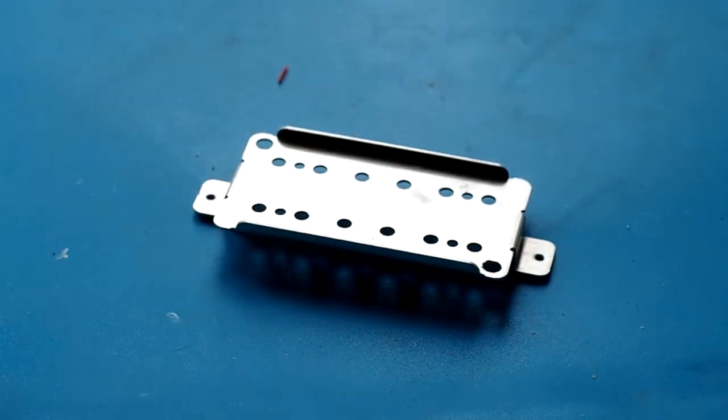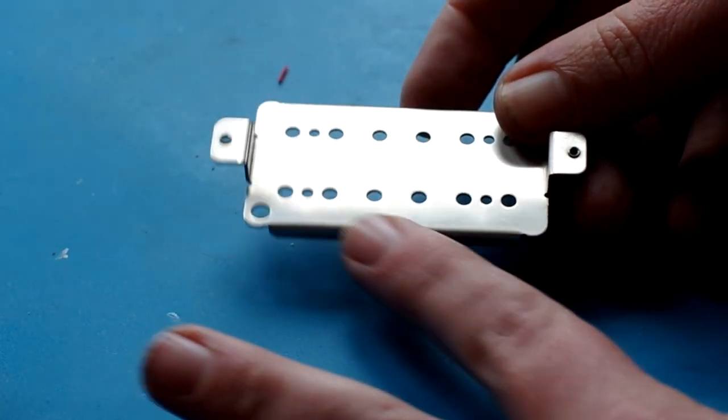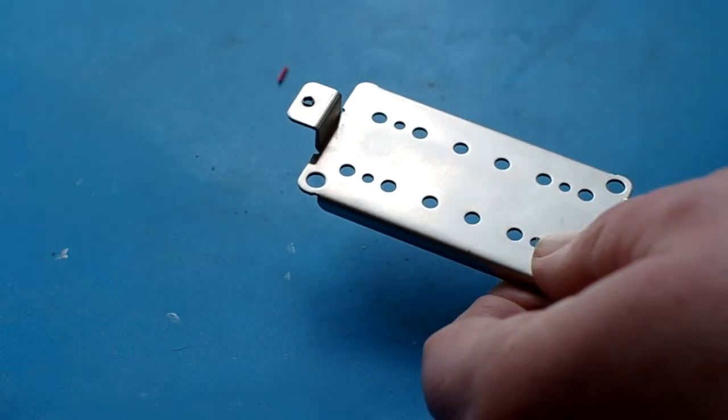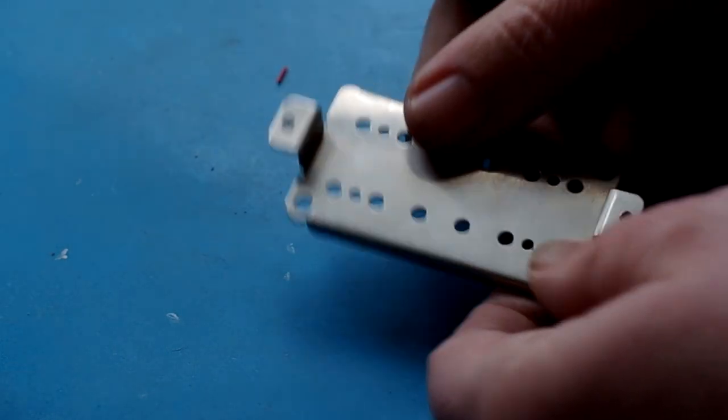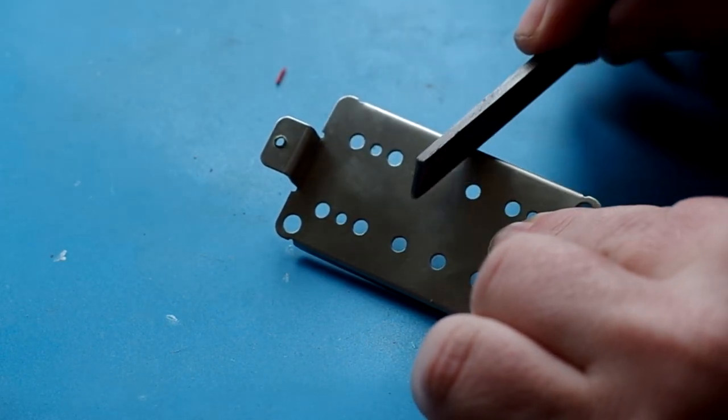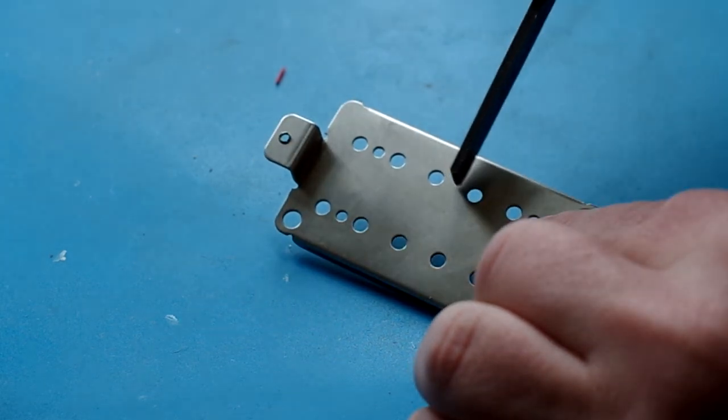Now I was just pointing in that shot there that we've got an existing solder joint on the bottom of our pickup which you can use. But I want you to imagine that you're installing a cover onto a pickup which has never had a cover on it. What you'll find is that solder won't take to bare steel that hasn't been filed in some way.